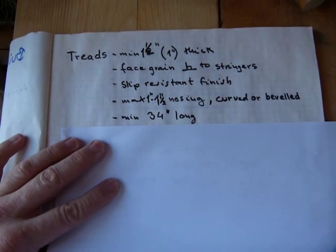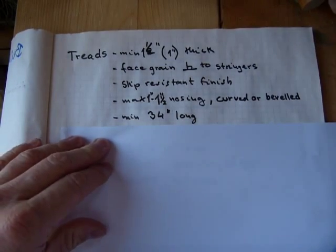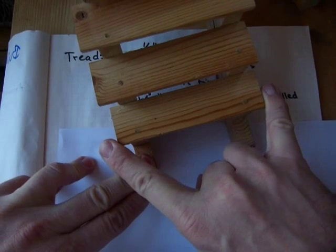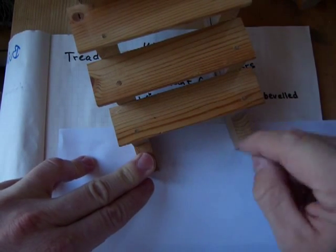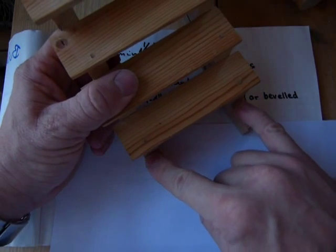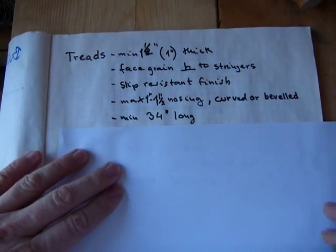The tread width, the treads must have at least, typically, a length of 34 inches. So that means that the stairway must be 34 inches wide, like so. And that's different from having a center-to-center dimension on the stair stringers.